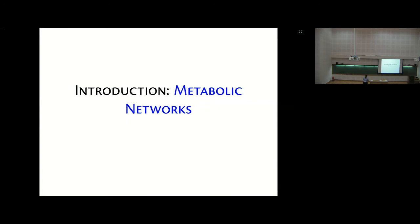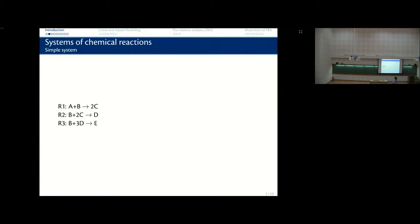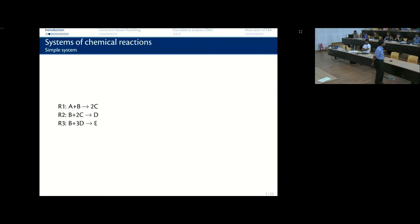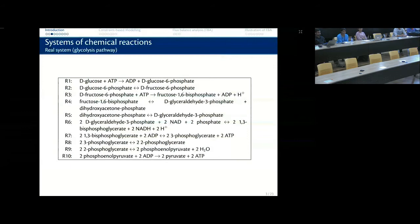You already have a pretty strong introduction to metabolism from yesterday. You're all familiar with simple systems of chemical reactions — A plus B giving 2C, B plus 2C giving D. These are stoichiometric coefficients: one mole of B reacts with two moles of C to give one mole of D. This is a real system — the glycolysis pathway — where glucose plus ATP gives glucose-6-phosphate and finally 2 moles of pyruvate.